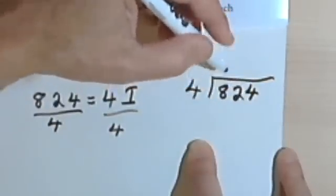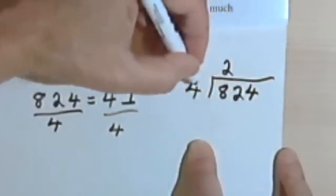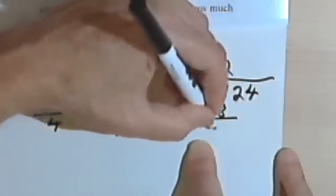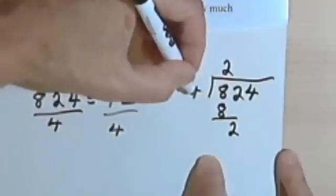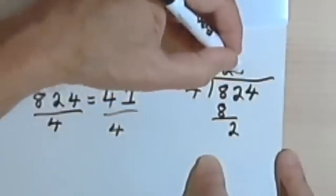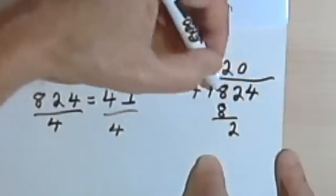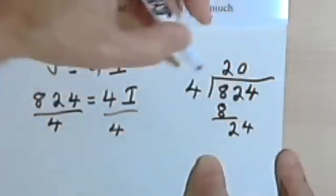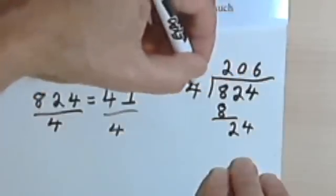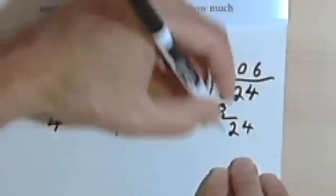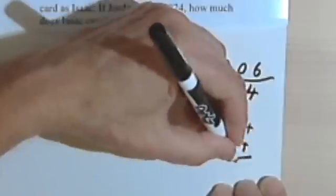So 4 into 8 goes 2 times. 2 times 4 is 8. Subtract, there's no remainder. Bring down the 2. I can't divide 4 into 2, so I'll put a 0 in. Bring down the 4. 4 into 24 goes 6 times. 6 times 4 is 24. There's no remainder.